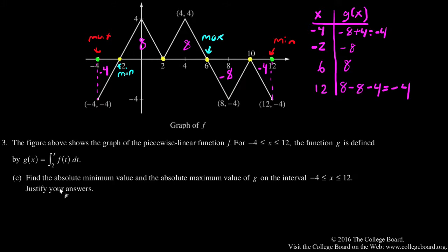And so finally, I want to find an absolute minimum value and the absolute maximum value. So the absolute min will occur at negative 2. The absolute minimum value is going to be negative 8 at x equals negative 2. And the absolute maximum is going to have a value of 8 at x equals 6.